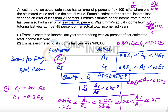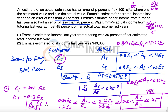Statement 1 leads us to conclude that AT over AI is less than or equal to 0.45, which is exactly what the question asked — so Statement 1 alone is sufficient. Statement 2 says Emma's estimated total income was $40,000, but this absolute value doesn't help us determine the ratio AT over AI, so Statement 2 is not sufficient.